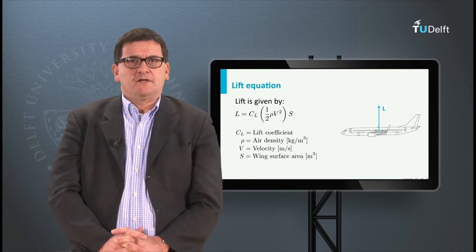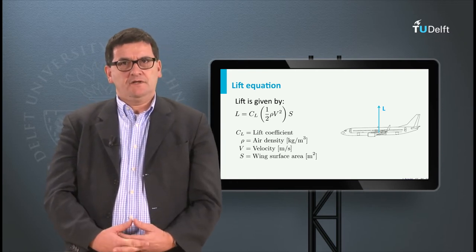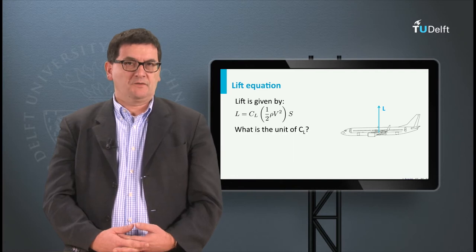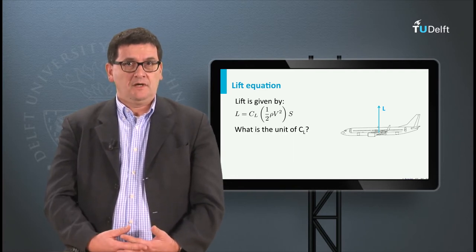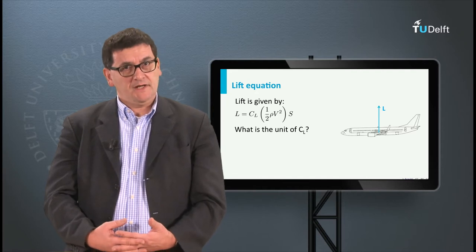For all parameters except for the coefficient, the dimensions of the parameters are given. The question is therefore, what is the dimension of Cl? How do we determine its dimension?